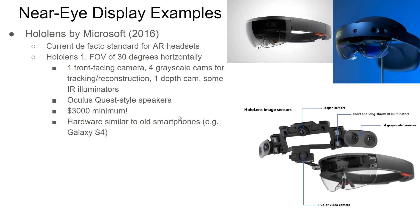The HoloLens was expensive — $3,000 minimum at launch, and still around $1,500 today. Its hardware is similar to older smartphones like the Galaxy S4, making it pretty weak — probably even weaker than Intel HD graphics. You really can't use complicated shaders; the HoloLens toolkit comes with optimized shaders that are mostly unlit or texture-only — no physically based rendering.